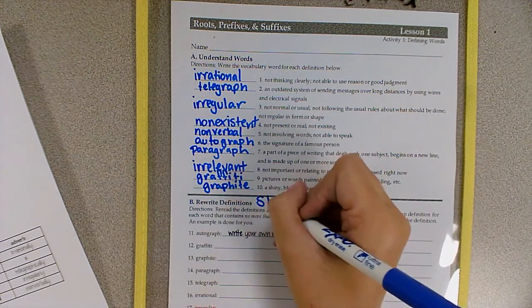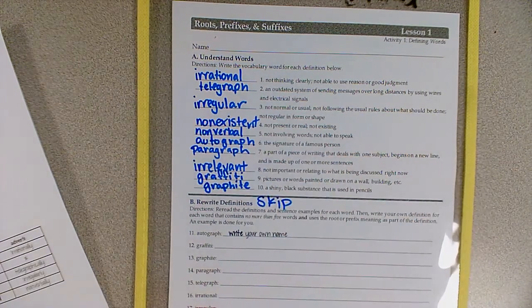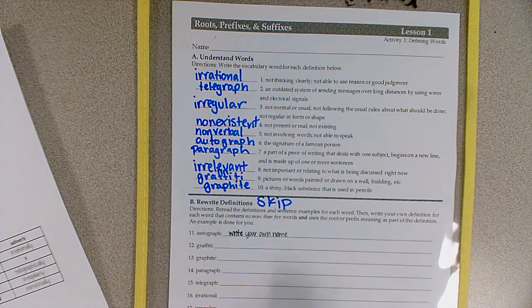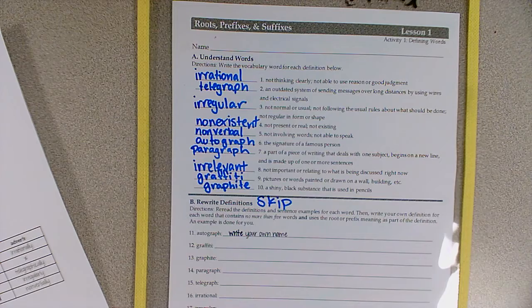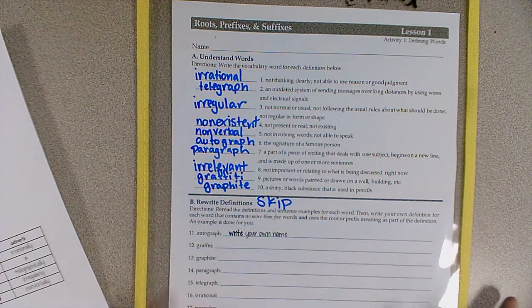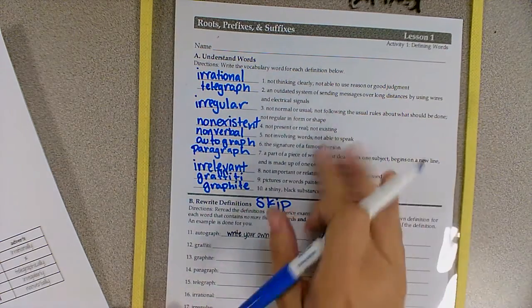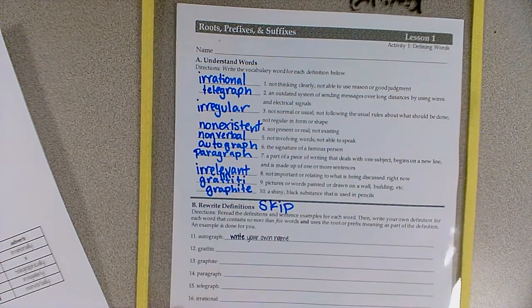And we are going to skip part B. So you can just write skip next to it. If you want to do it on your own, you're more than welcome to. Writing the definitions in your own words may help you to remember the definitions of the words a little bit better. So if you want to do it, go for it. If you need more time to write these down, this would be a great place to pause the video.